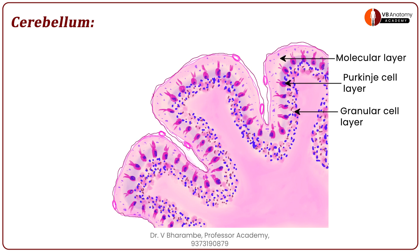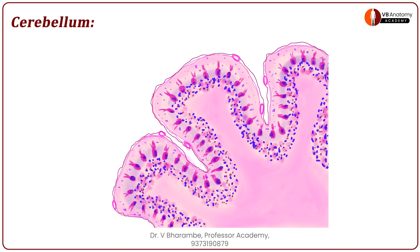You can see the three layers in the cortex: molecular layer, Purkinje cell layer, and granular layer. Now let us move on to the medulla, where you have to draw lines indicating the presence of axons passing through the white matter.